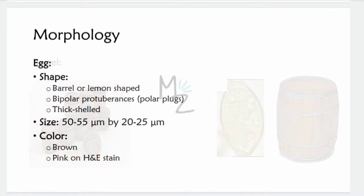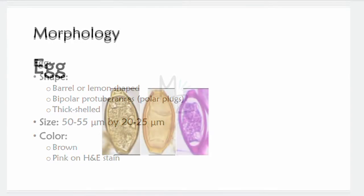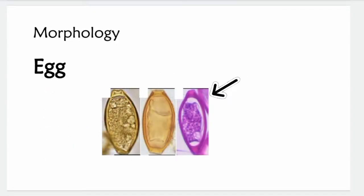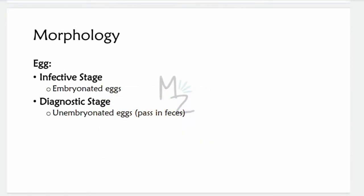It also resembles a lemon because a lemon is also wide from the center and narrow from top and bottom, and it has a thick shell. The size varies from 50 to 55 micrometers by 20 to 25 micrometers. It is brown in color but appears pink on H&E stain. The infective stage of the egg is when it is embryonated, and the diagnostic stage is when it is unembryonated. Eggs are passed in stool in their diagnostic stage.